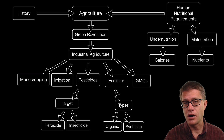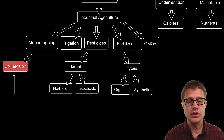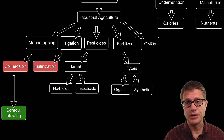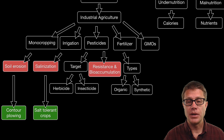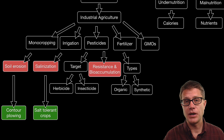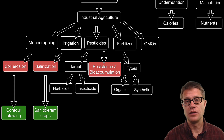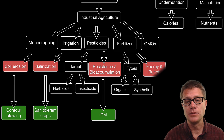Monocropping, for example — when you harvest all of those plants it can lead to soil erosion and a lack of biodiversity. How could we prevent soil erosion? Things like contour plowing. Irrigation depletes aquifers and can lead to salinization, so we could perhaps develop new salt tolerant crops. Pesticides have a double problem: pests are going to become resistant to the pesticides, and also those chemicals are going to bioaccumulate within the food web. We can use processes like integrated pest management to try and mediate those problems.